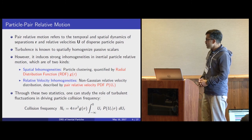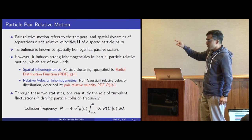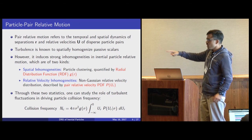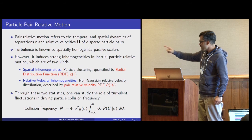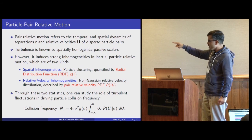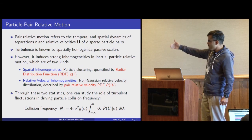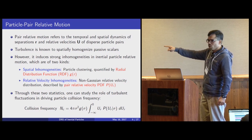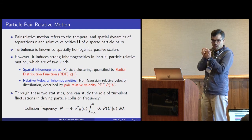Why are we specifically interested in clustering and the PDF of U_R? The reason is that G(R) and the PDF P(U_R) are two key inputs to the collision frequency of particles. Inside the integral there is the PDF P(U_R) conditioned upon the particle pair being in contact, as well as G(sigma), the radial distribution function conditioned upon particle pairs being at contact.